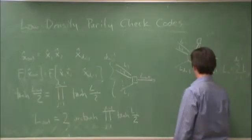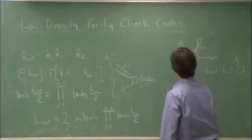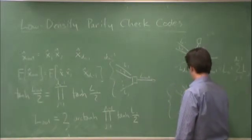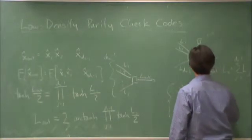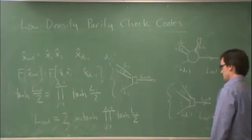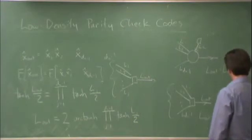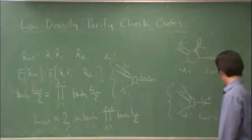And at a check, there are dc minus 1 of these: L1, L2, and so on, up to Ldc minus 1. And then Lout. Now I have Lout is equal to 2 arc tanh of the product of the tanh of this function of the inbound messages.